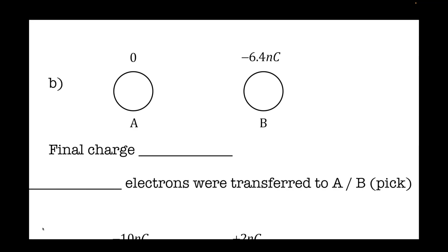Welcome back. So until now, we talked about just any object. Electrons can be transferred from an object and onto an object, and that is how an object gets a charge. There are two types of materials in this world — there are insulators, and then there are conductors.